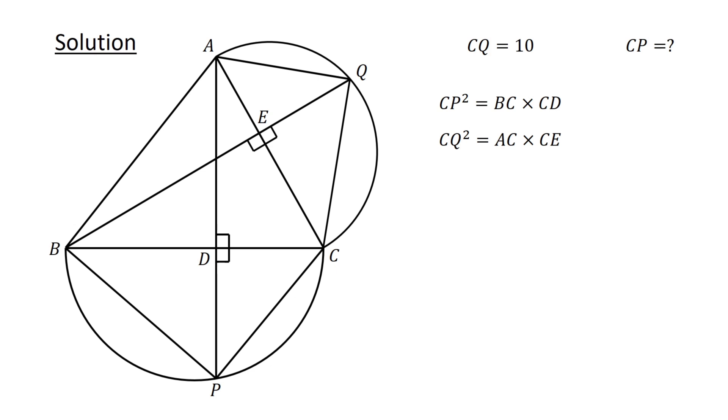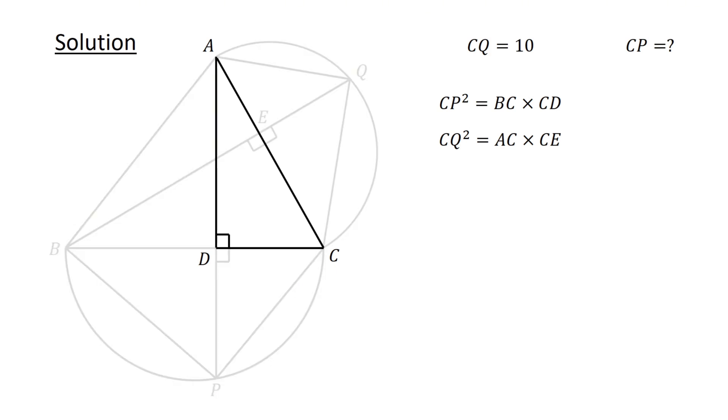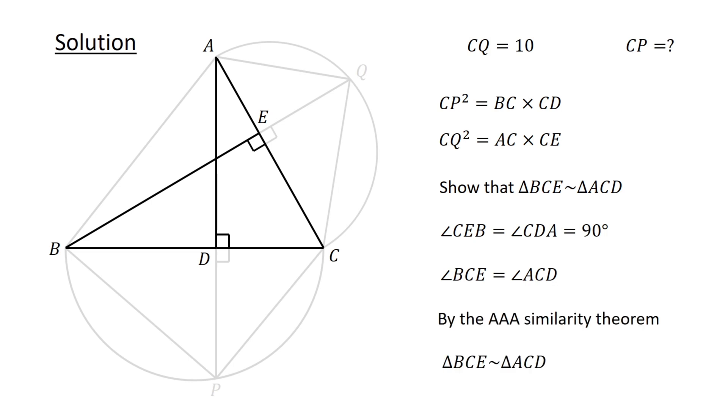Next, let's focus on triangle ACD and triangle BCE. Let's show that triangle BCE is similar to triangle ACD. Observe that angle CEB and CDA are both right angles. Furthermore, this angle is common to both triangles. That is, angle BCE equals angle ACD. Therefore, by the AAA similarity theorem, the two triangles are similar.